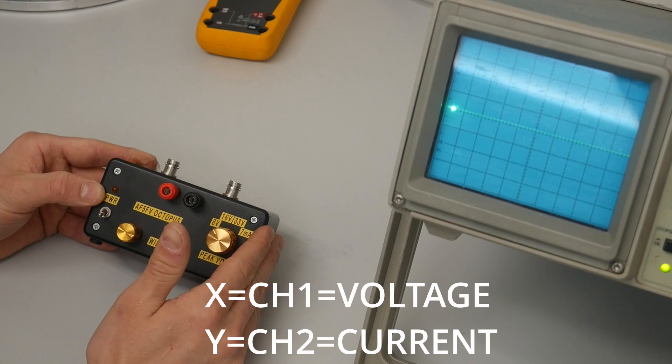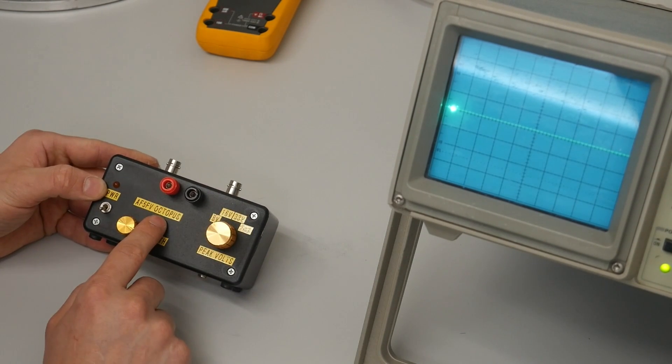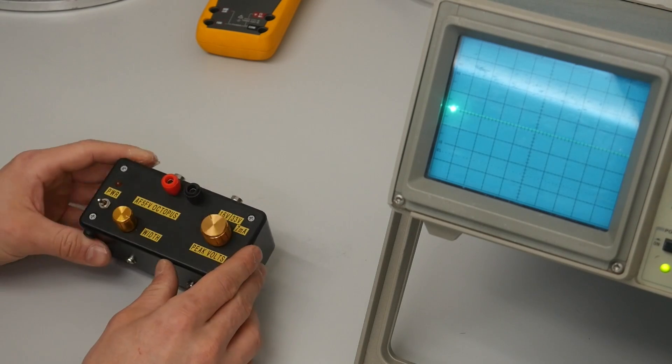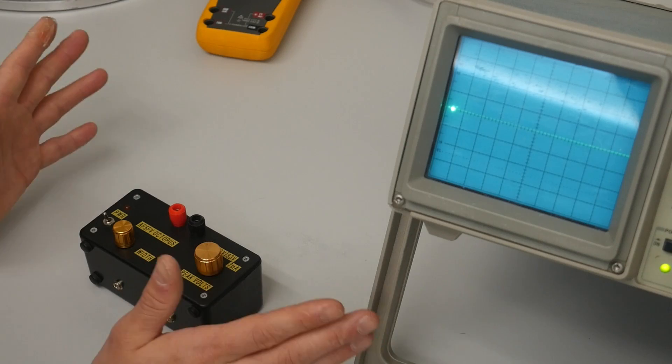You can buy a curve tracer like the Octopus as a kit, or as a download a schematic and build your own, or if you want to you may have in your lab an end-use product that is a curve tracer, just like this oscilloscope's an end-use product.